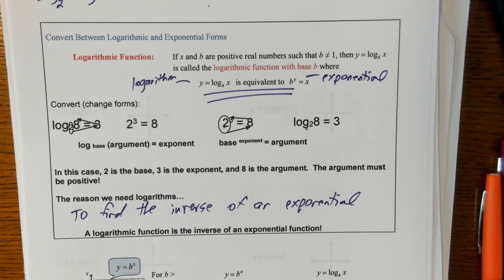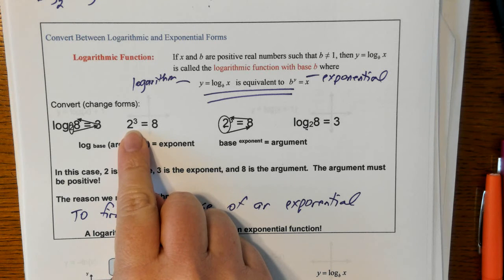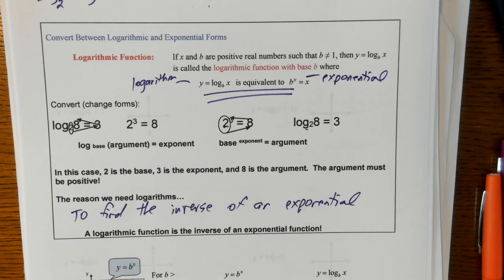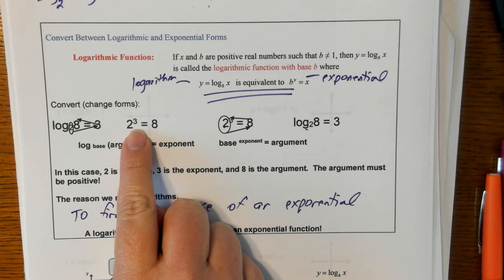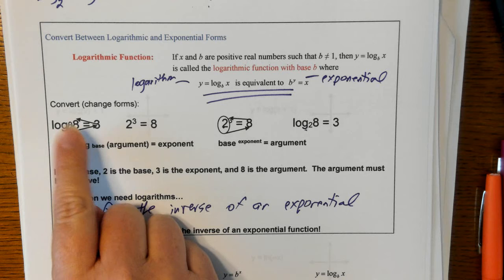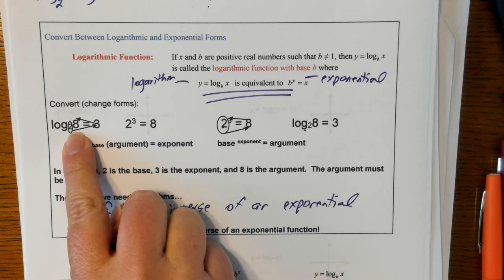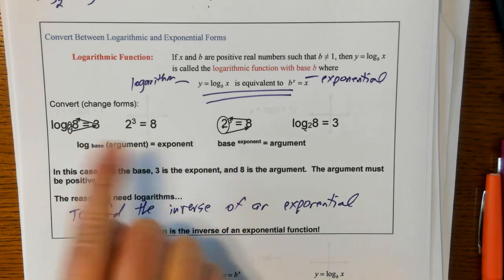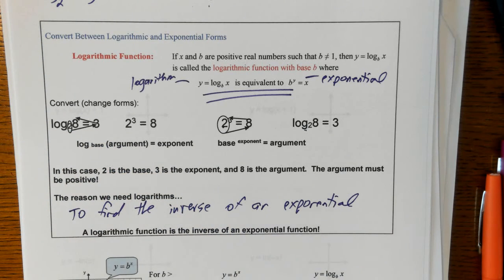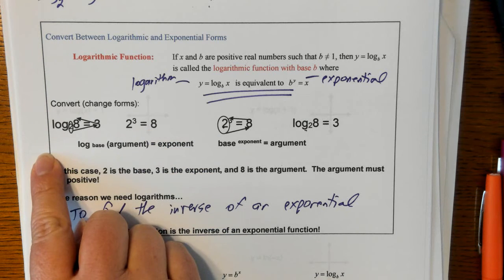A student once pointed out: we learn exponents in school — two to the third power, four to the second power — and that's probably why we have a hard time with logs. But if they had taught us logs first, we would think in log form and have a hard time with exponents. That's a really good way to think about it. We're comfortable with exponents; it's logs that sometimes give us trouble. So we can convert back and forth — if you're having trouble with a log, convert it to an exponential; if you're having trouble with an exponential, convert it to a log.